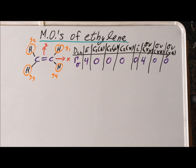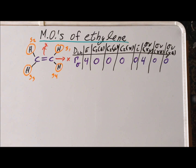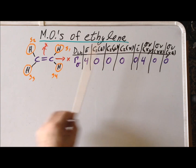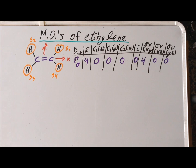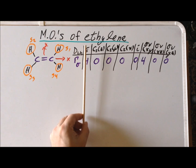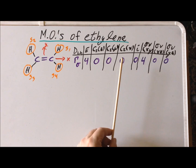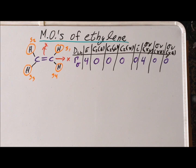Now we notice that our reducible representation has only two non-zero characters. That means we can expedite our reduction by only confining our attention to the E class and the sigma v xy class, because all the other terms will end up being zero.